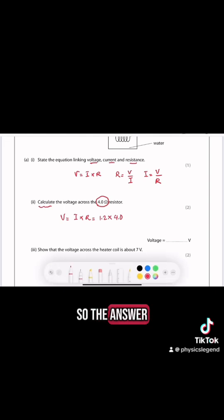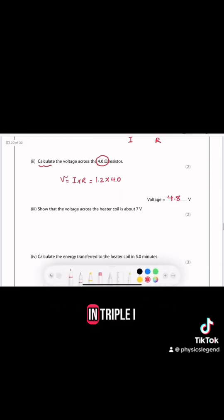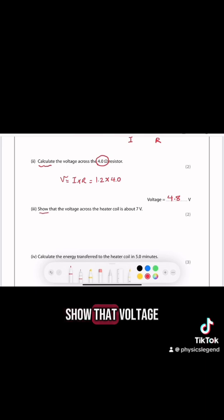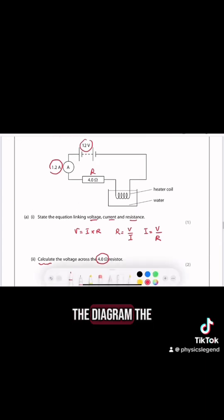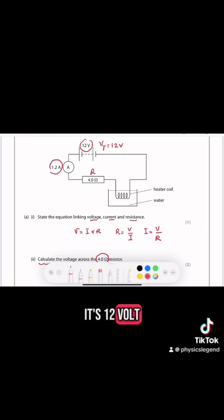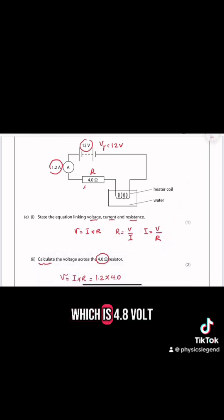So the answer is 4.8 to two significant figures. In part C, show that the voltage across the heater is about 7 volts. If you go back and check the diagram, the voltage here, which is V total, is 12 volts, and the voltage across the resistor is 4.8 volts.